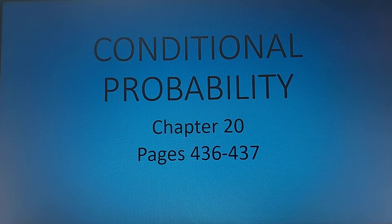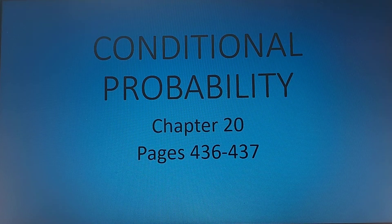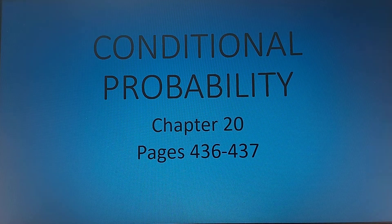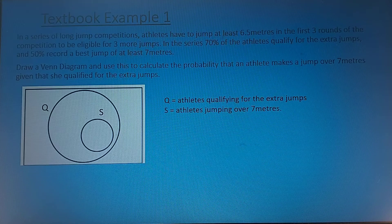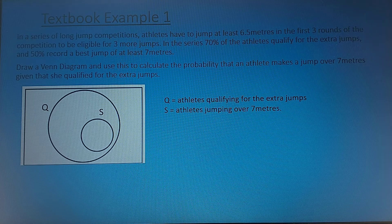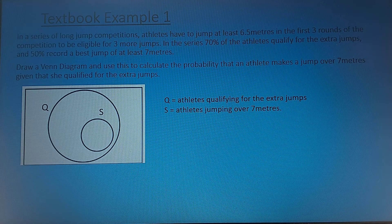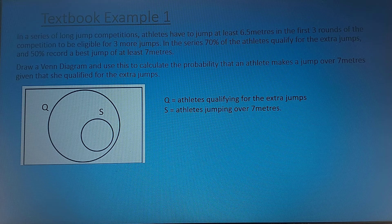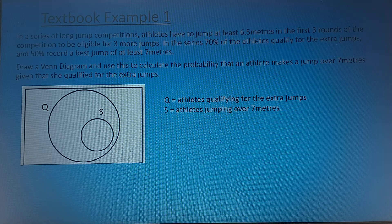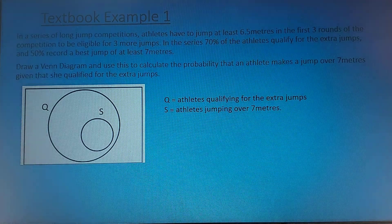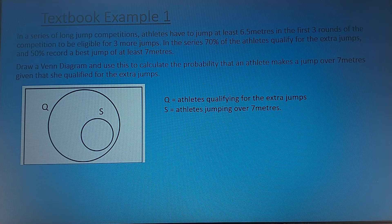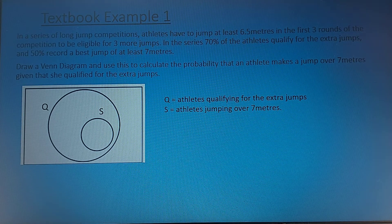Hello, this is the second lesson on conditional probability, referring to pages 436 and 437 on Kaboodle. We'll go through the textbook example first. In the first example, we have a series of long jump competitions where athletes have to jump at least 6.5 meters to qualify for the next round of jumps.